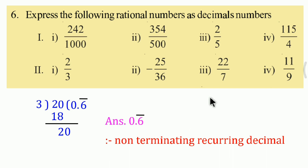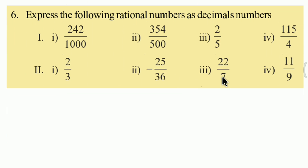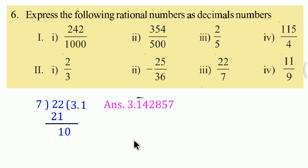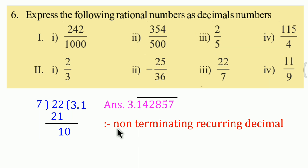Next, the second one: 22 upon 7. First, 3 times 7 is 21. From 22, we get remainder 1. Then we place a point and start. After the full division, the answer comes out to 3.142857 with a bar - the digits 142857 repeat. This is also a non-terminating recurring decimal. You try the division - it is quite easy.